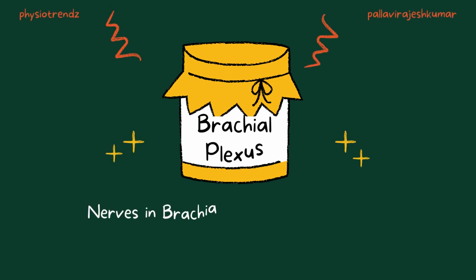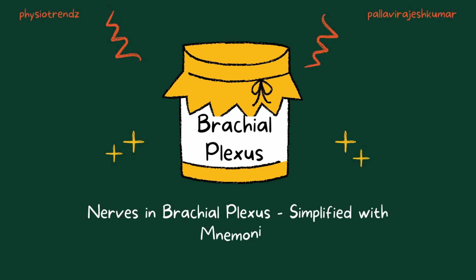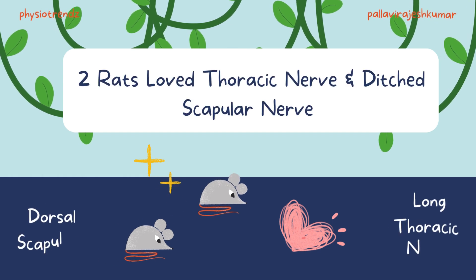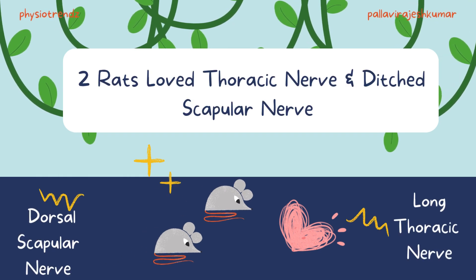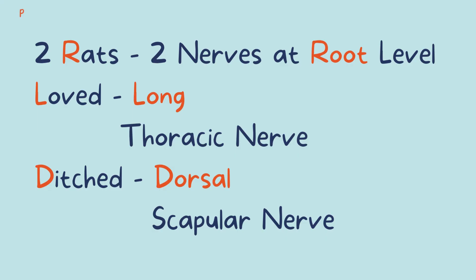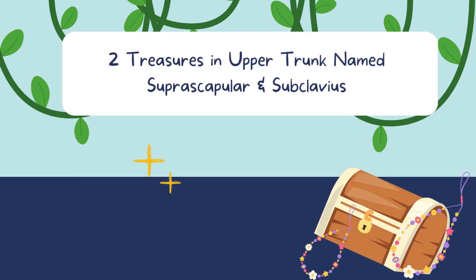Hello everyone, let us discuss nerves in the brachial plexus with mnemonics. '2 RADs love thoracic nerve and ditched scapular nerve.' The 2 R's stand for 2 nerves at the root level: L for long, D for dorsal.